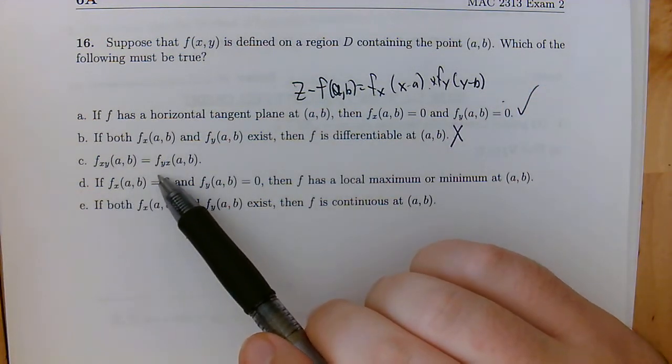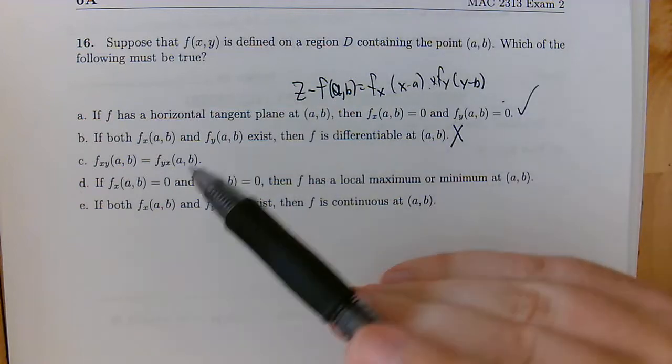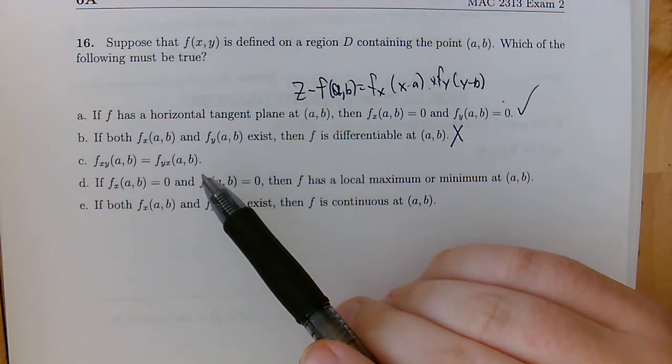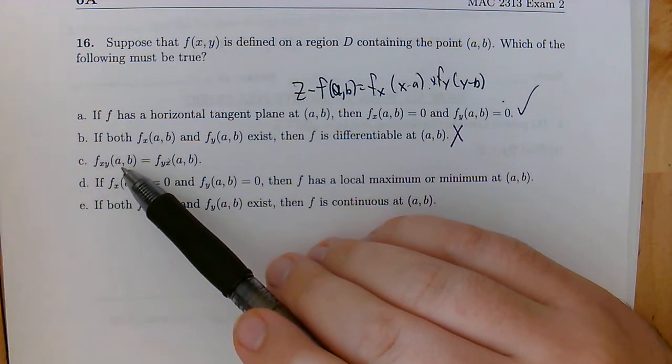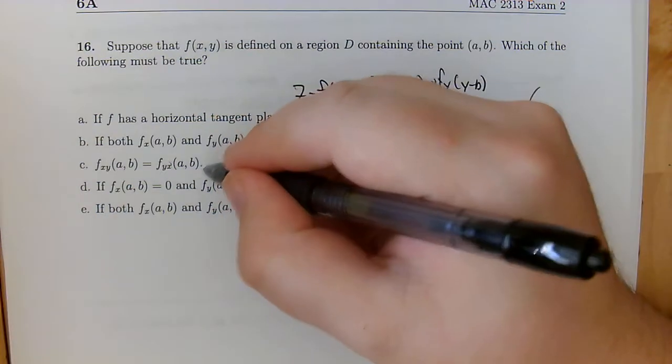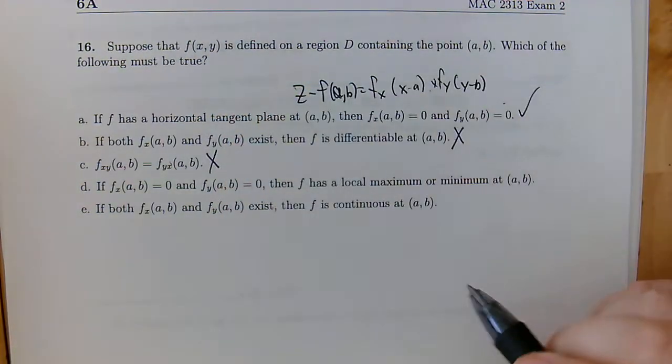f_xy at (a,b) is the same as f_yx. Now, you might be tempted to say, oh, yeah, well, that's going to be true. But remember, this is only true if these functions are continuous, and they didn't say anything about that. So it doesn't necessarily have to be true.